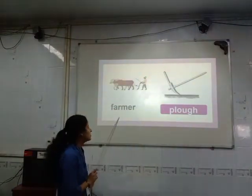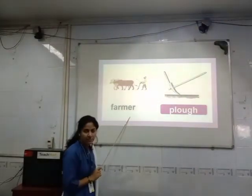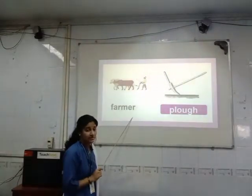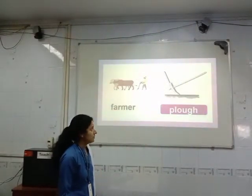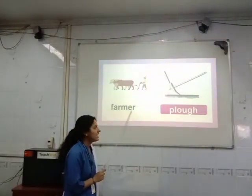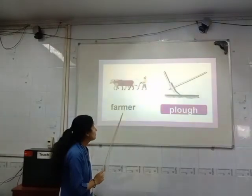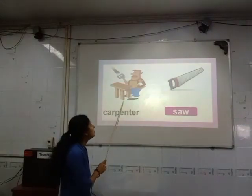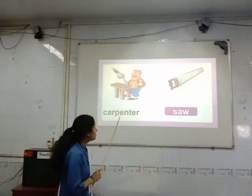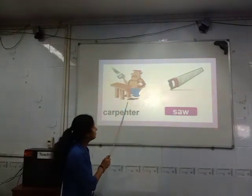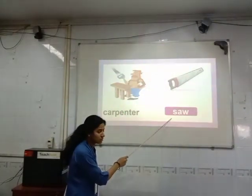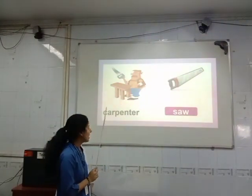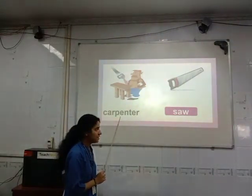Now see the next picture. What do you see? You will see a farmer. A farmer grows crops in the field — vegetables and more — and they come to us. So which tool does he use? He uses a hoe. So farmer uses which tool? A hoe. Now see this picture. What do you see? He is a carpenter. With the use of wood and a saw, he makes tables, cupboards and many things for us. So the carpenter uses which tool? The carpenter uses a saw.